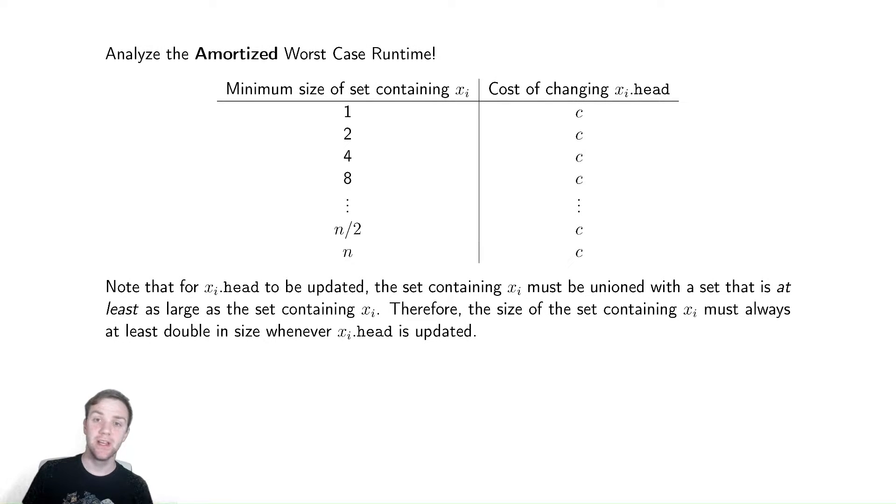As you might imagine, there are many different ways in which we could combine N disjoint sets having one element to build a set containing every single element. Because of this wide array of possibilities, we're going to analyze how long it would take to combine all of the elements into a single set.